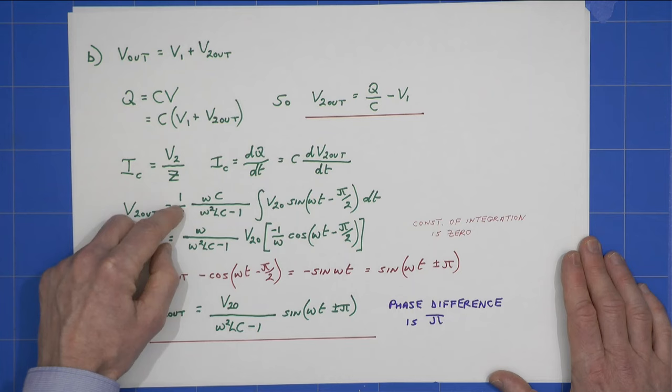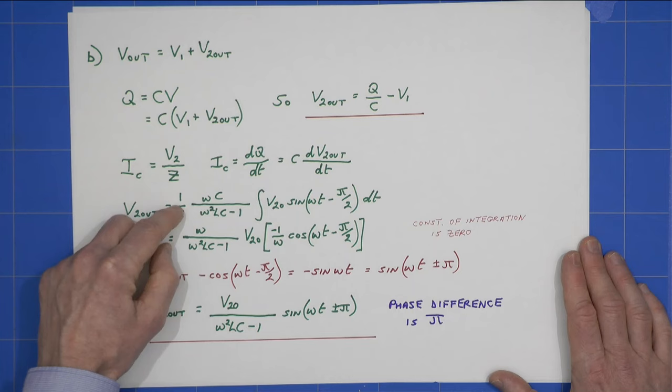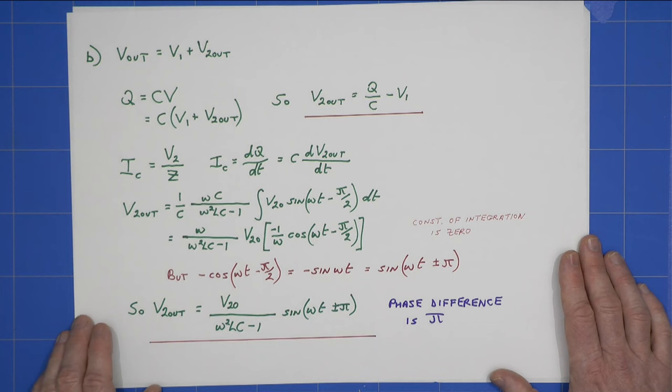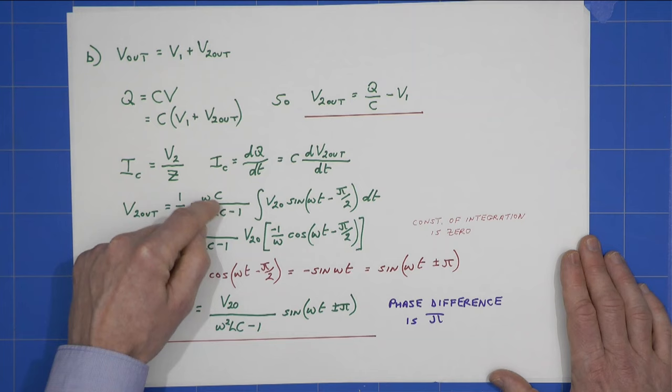And note straight away that the capacitor, the C, will cancel with that C. And when I integrate this, I will get this expression here. If I integrate this bit, I'll get this little bit here, which will introduce a minus 1 over omega, and of course, cos omega t minus pi by 2. So at this point, I can then lose the omega and the omega.